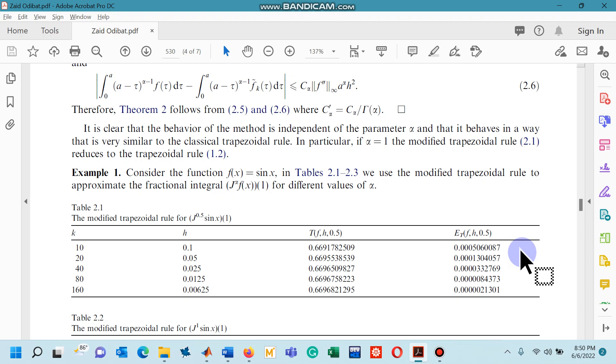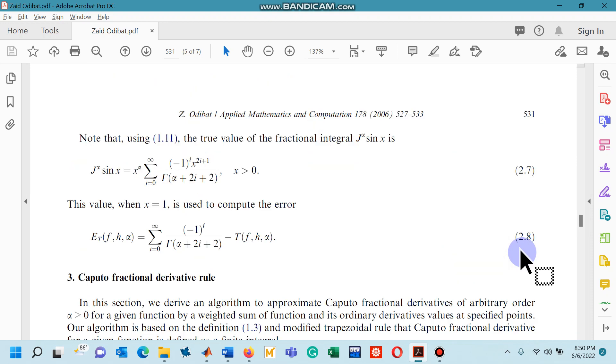The absolute errors were possible to compute because the author has shown here the exact fractional integral of order alpha for the function sin x in terms of an infinite series. So if you put x is equal to 1 here, you will see that it reduces to the first term on the right-hand side of equation 2.8. So this is the exact one and if you subtract the value obtained with the modified trapezoidal method you will get the absolute error.